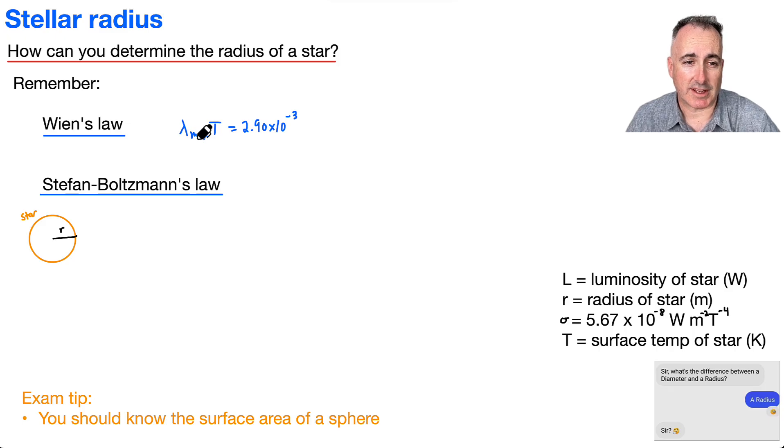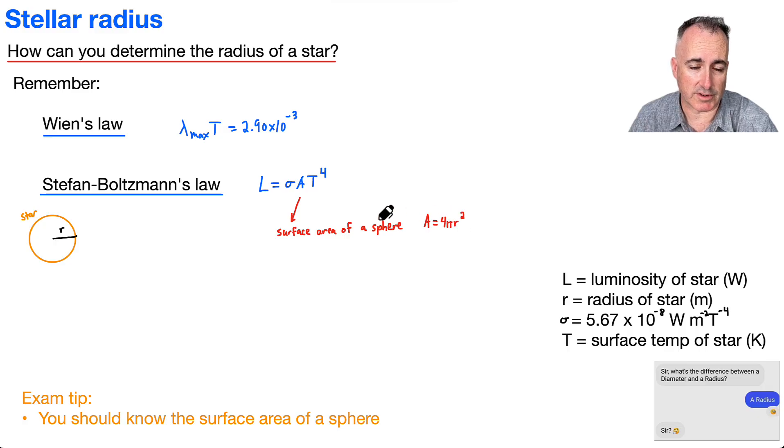And then we have Stefan-Boltzmann's law, which says that the luminosity equals sigma times A T to the fourth. But the key thing is this A. What's this A? This A is the surface area of a sphere. And this is something I need you to know. A equals 4πr². So it's like the area of a circle, except you throw a 4 in front of it. That's the surface area of a sphere.